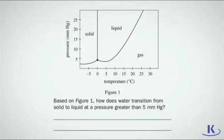Based on Figure 1, how does water transition from solid to liquid at a pressure greater than 5 millimeters of mercury? First, look at Figure 1. The boundary between solid and liquid water is a straight line that goes up from 0 degrees Celsius on the x-axis.